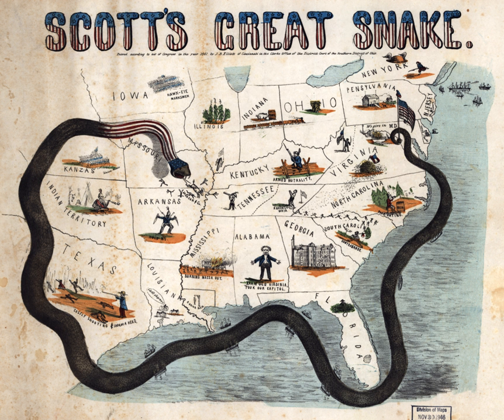The lower seaboard theater of the American Civil War encompassed major military and naval operations that occurred near the coastal areas of the southeastern United States, in Alabama, Florida, Louisiana, Mississippi, South Carolina, and Texas, as well as the southern part of the Mississippi River, Port Hudson and south.